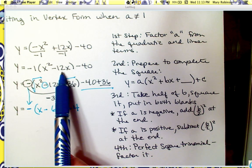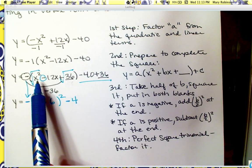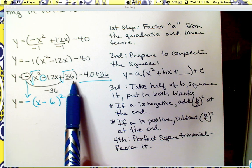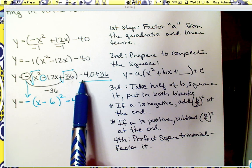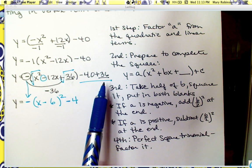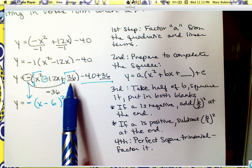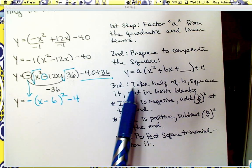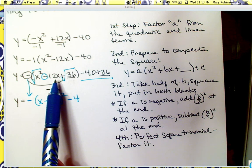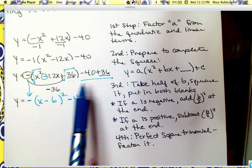So dividing it out we've got x squared minus 12x in parentheses, minus 40. Second step is to prepare to complete the square: with our a value on the outside, write x squared plus bx plus blank, bring down our constant term, and pay attention — if a is negative, we're going to add at the end. We take half of b and square it and put it in both blanks. Half of 12 was 6; 6 squared was 36.